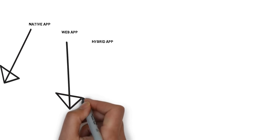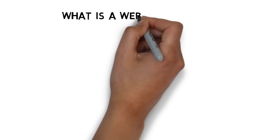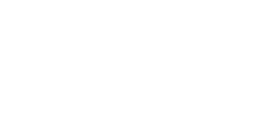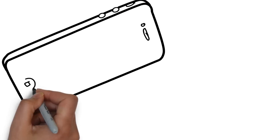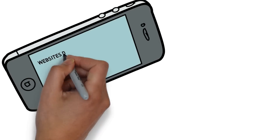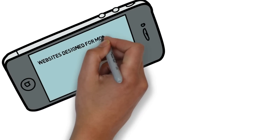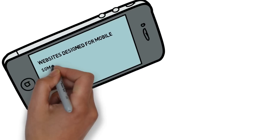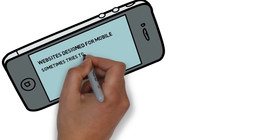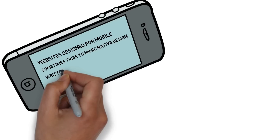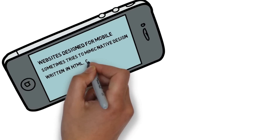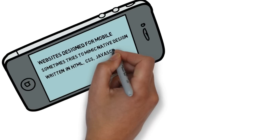Next up, we'll go over a web application. What is a web app? It's a website designed for mobile. It sometimes tries to mimic the native design. It's written in HTML, CSS, and JavaScript.